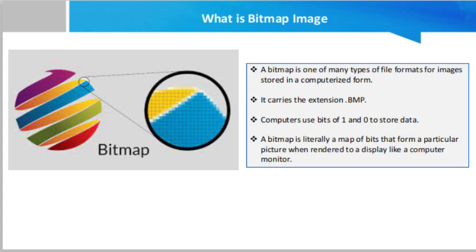A bitmap is one of the many types of file formats for images stored in a computerized form. It carries the extension .bmp. Computers use bits of 1 and 0 to store data. A bitmap is literally a map of bits that form a particular picture when rendered to a display like a computer monitor.